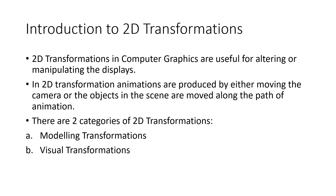So let's begin with introduction to 2D transformations. 2D transformation in computer graphics are useful for altering or manipulating the displays. In 2D transformation, animations are produced by either moving the camera or the objects in the scene are moved along the path of the animation. Now there are two categories of 2D transformation: first one is modeling transformation or geometric transformation, and second one is visual transformation.